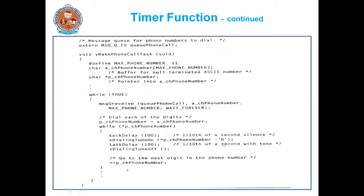This is the make phone call task function. Here we have a message queue for phone numbers to dial, and this is the function that makes the call. We are declaring some local variables: ACH phone number, which is an array that stores the phone number, and a pointer to that phone number. The array stores the phone number and the pointer points to it.